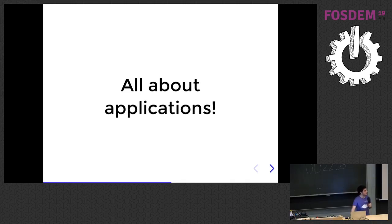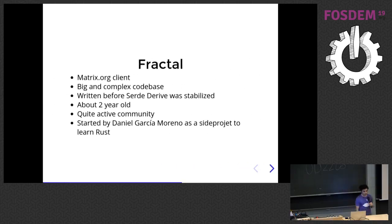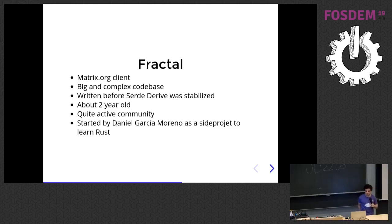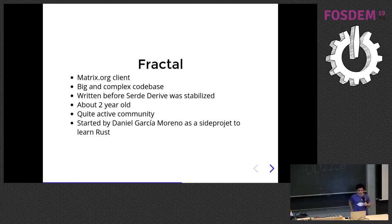There are a couple of applications that have popped up. The first one is Fractal, a matrix.org client. It's a big application and was an experiment for the most part. It was written before many nice things were established, like serde derive and serialization. The codebase is not as pretty or easy to work with, and there's a huge effort on refactoring it. It has a quite active community — it's amazing because all these new people came from the Rust community and had nothing to do with GNOME. It was started by Daniel Garcia as a side project, mostly to learn Rust.